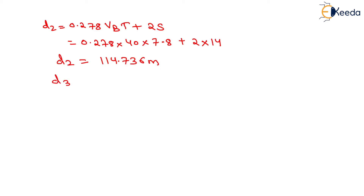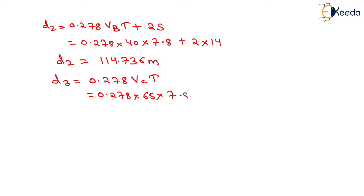We will compute the value of D3 which will be equal to 0.278 × VC × T. The value of VA and VC will be the same, so it will be equal to 0.278 × 65 × 7.8. On solving this, we will get 140.946 meters as the value of D3.